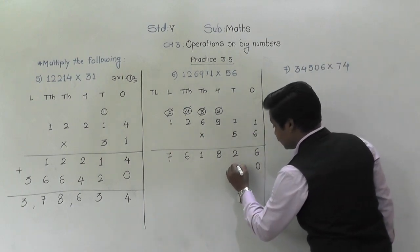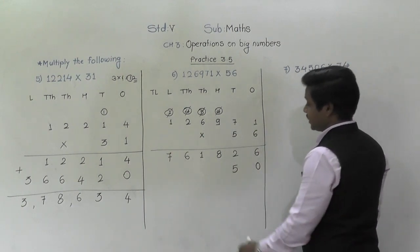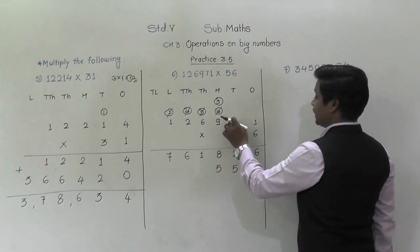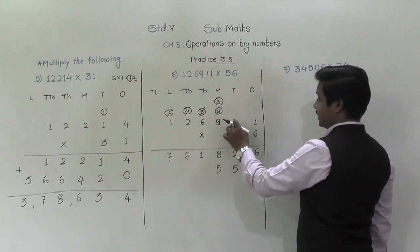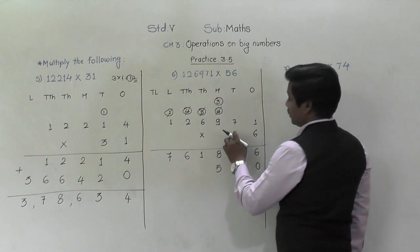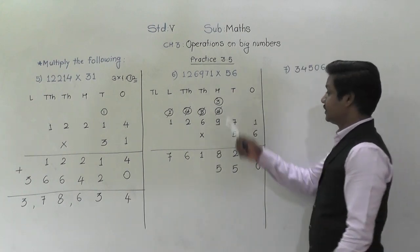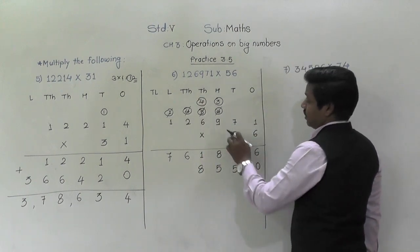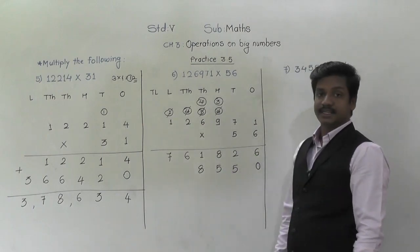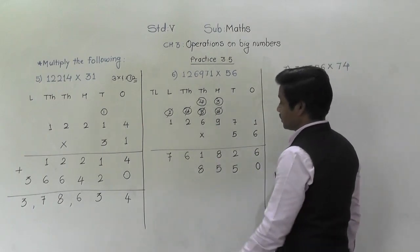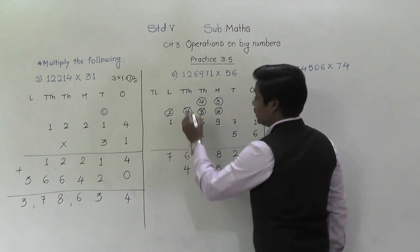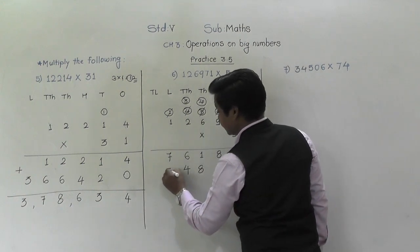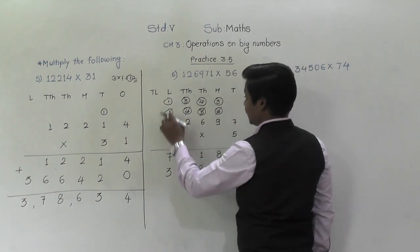Now, five ones are five. Five sevens are thirty-five — five will come down, three will be carried to the hundreds place. Five nines are forty-five. Forty-five plus three is forty-eight — eight will come down, four will be carried. Five sixes are thirty. Thirty plus four is thirty-four — four will come down, three will be carried. Five twos are ten plus three is thirteen — three will come down, one will be carried. Five ones are five and one is six.